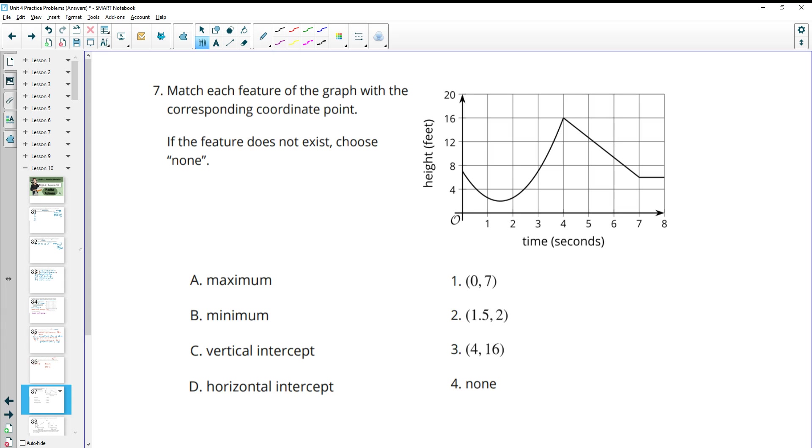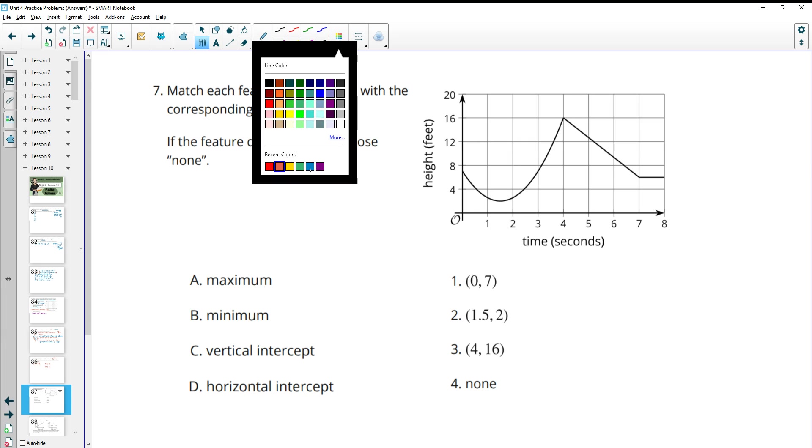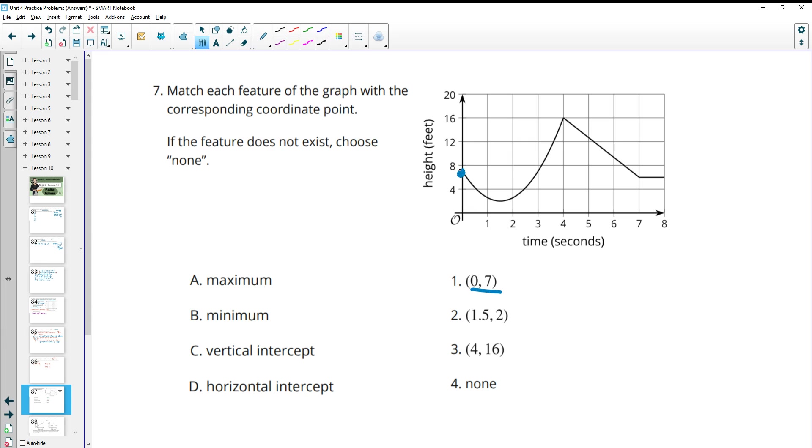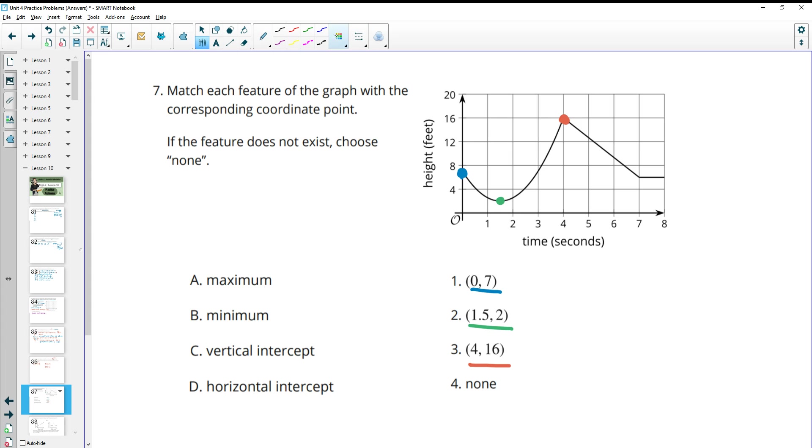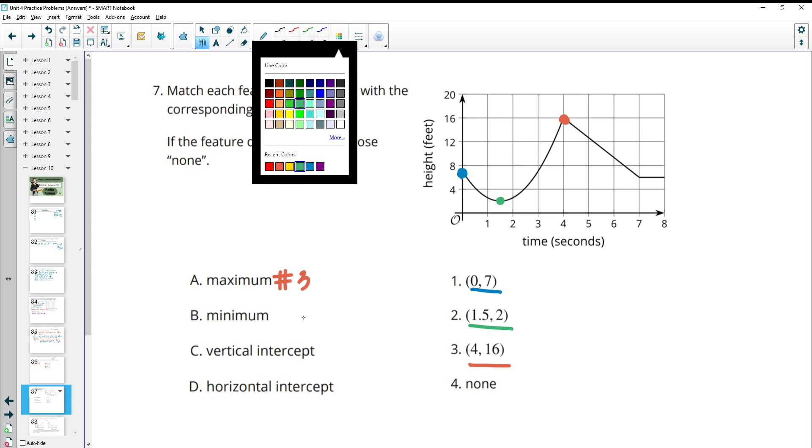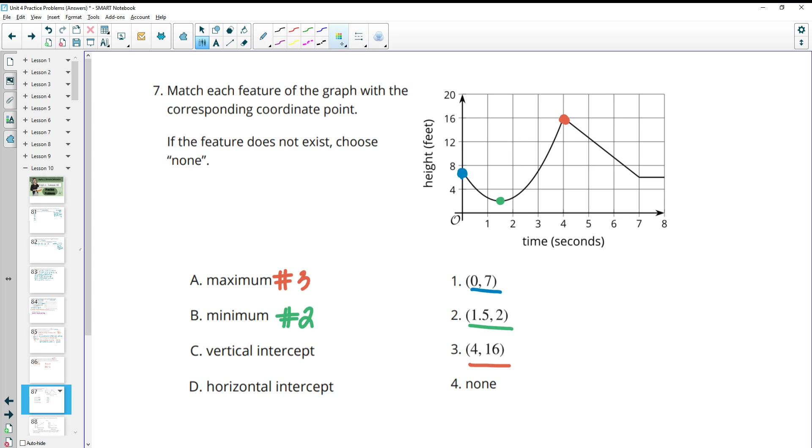Number 7. Match each feature of the graph with its corresponding coordinate point. If the feature does not exist, choose none. So let's go ahead. I'm just going to plot these points on here first. So (0, 7) is looking at this. (1.5, 2) is looking here. And then (4.16) is looking here. So when we look at this, we can see that (4, 16) is at the top. So that's your maximum. So number 3 goes with A. The minimum is number 2, (1.5, 2). The vertical intercept, where it crosses the vertical axis, that's number 1. (0, 7) is where it crosses the vertical axis. And then the horizontal intercept, the graph never touches the horizontal axis. So that's none, number 4.